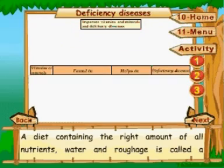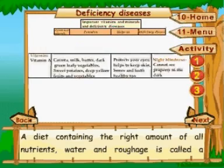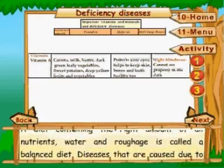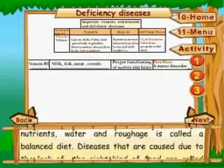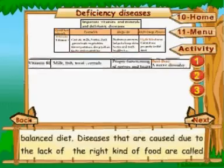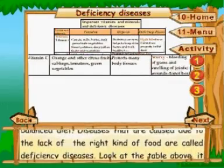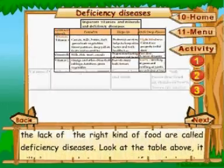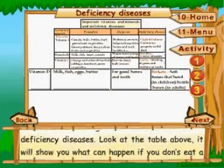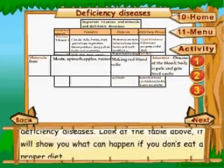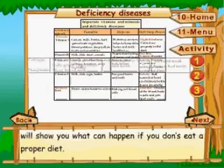Deficiency diseases: a diet containing the right amount of all nutrients, water, and roughage is called a balanced diet. Diseases that are caused due to the lack of the right kind of food are called deficiency diseases. Look at the table — it will show you what can happen if you don't eat a proper diet.